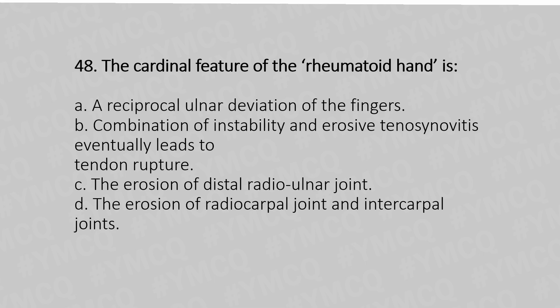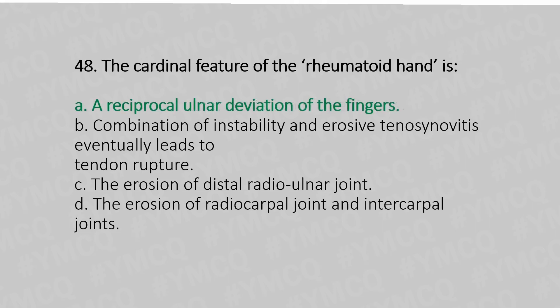Now let's move to question number 48. The cardinal feature of the rheumatoid hand is: option A, reciprocal ulnar deviation of the fingers; option B, combination of instability and erosive tenosynovitis eventually leading to tendon rupture; option C, erosion of the radiocarpal joint and intercarpal joints. The answer is option A: reciprocal ulnar deviation of the fingers.